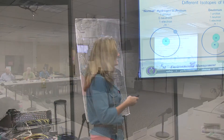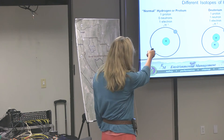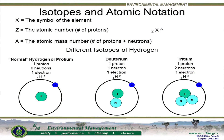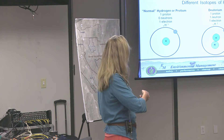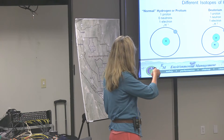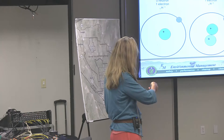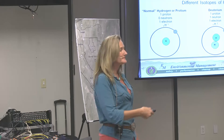This is the atomic notation. The X is always the symbol of the element. The Z number is the number of protons. The atomic mass is the number of protons and neutrons combined. For instance, if we take tritium, X would be H. The atomic mass number would be three — because it has two neutrons and one proton. And the atomic number, which is the number of protons, would be one.